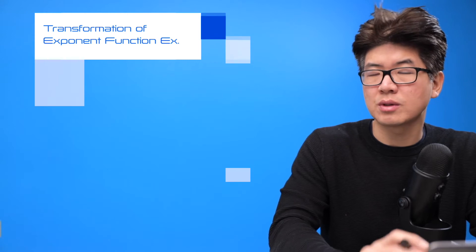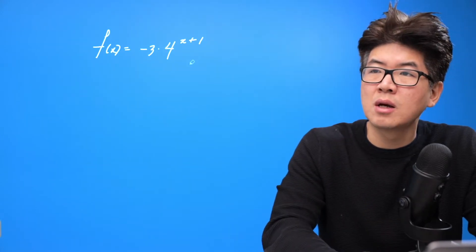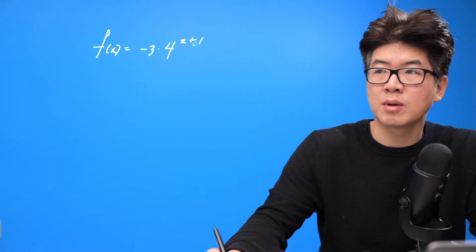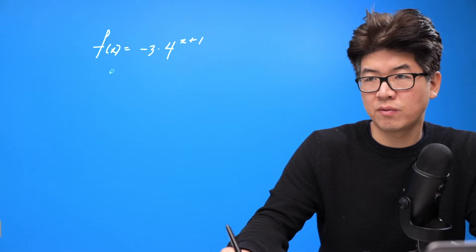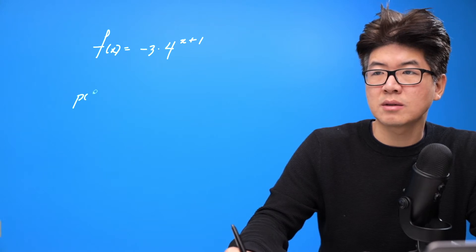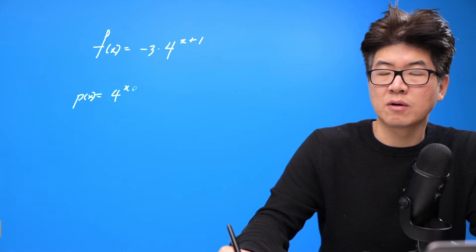Very slow and step by step process on why the transformation works the way it does with this example. So here it is, f(x) equals minus three, four to the power of x plus one. So the main function here, you have to identify the base parent function. So let's call that p(x) for parent function. And that's four to the power of x.